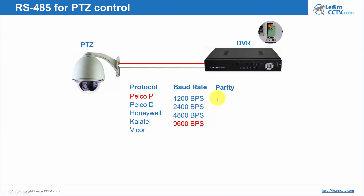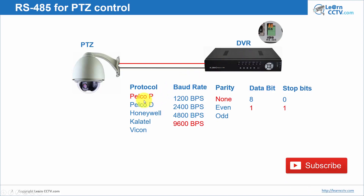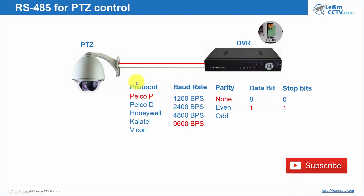You also need to choose your parity: none, even, or odd. I'm going to use none here. Data bits — either eight or one; I'm going to use one. And stop bits — I'm going to use one. So that's the combination: Pelco P, 9600, none, one, one. Whatever you set in the camera, you must set the same in the DVR. In the camera you have DIP switches — you change the switch positions to choose those parameters: protocol, baud rate, parity, data bits, and stop bits. You follow the sequence on the camera and do the same in your DVR menu.